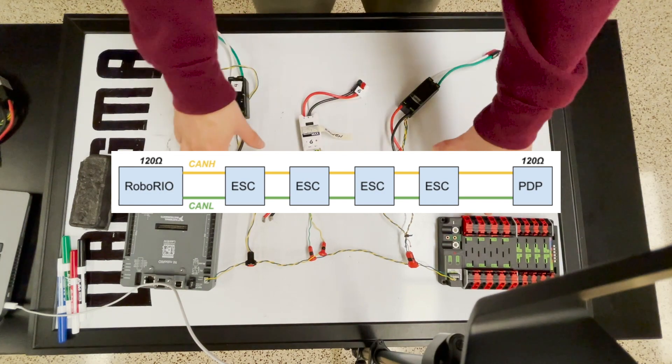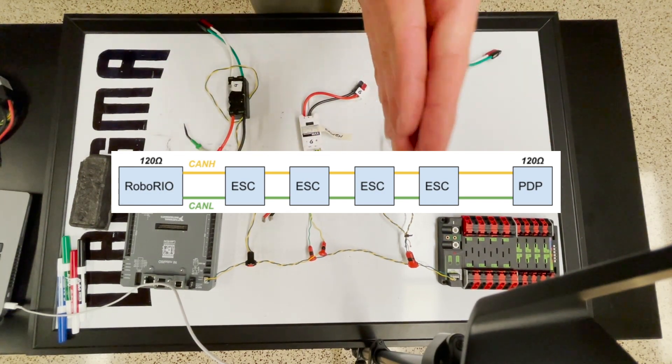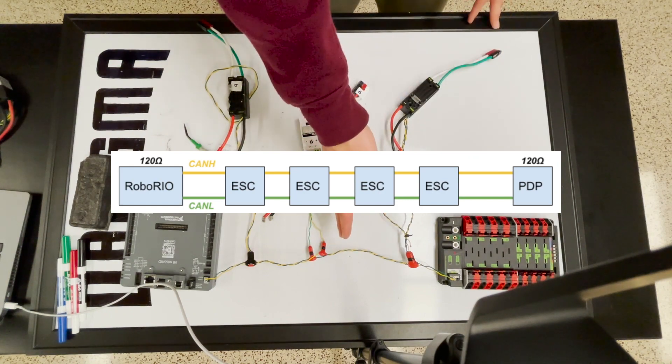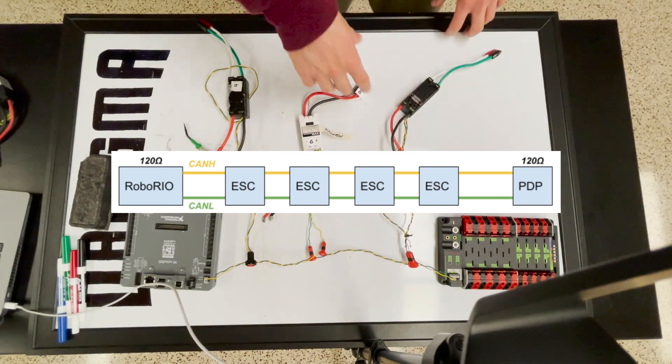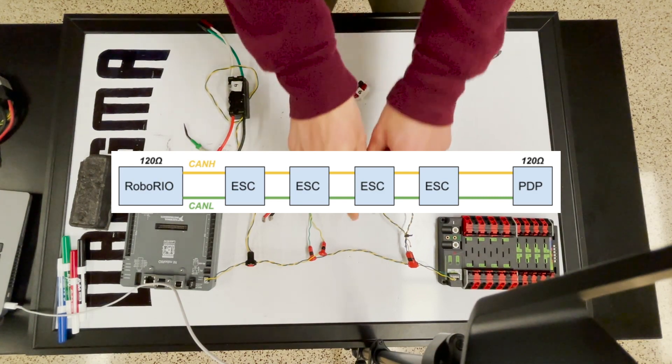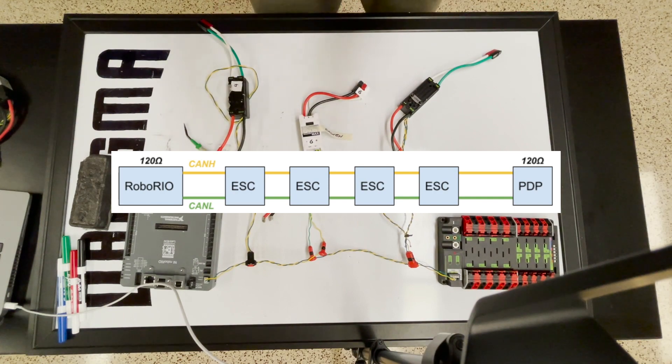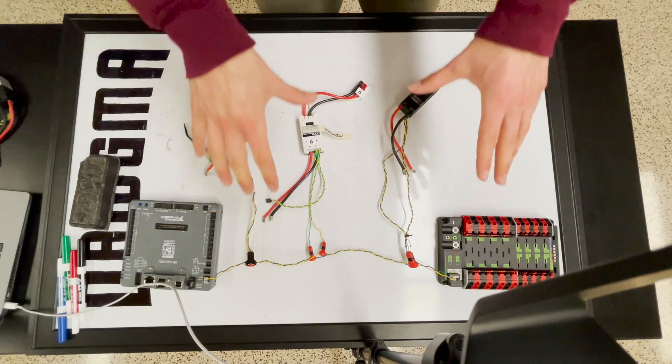Also, remember that both ends of the circuit have to have 120 ohm resistors. So if all of a sudden we have a break in the middle of our CAN bus and one side can no longer communicate, then that means that in that middle we then have two electrical ends that are exposed and they do not have resistors on them. So that's why we choose to use this design instead.